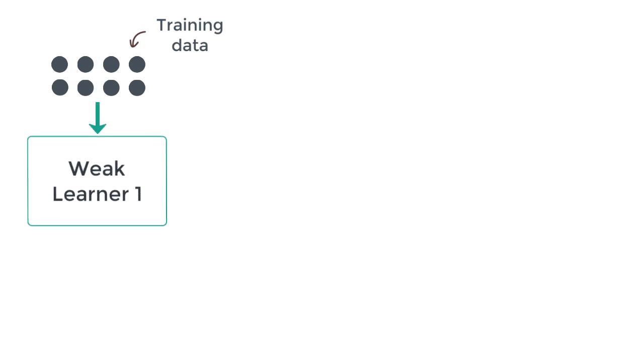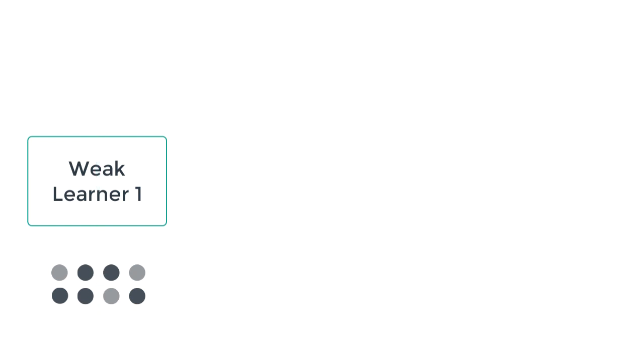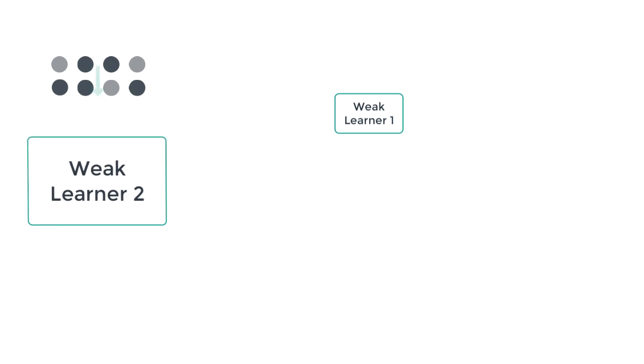Here's the algorithm. Step 1, initialize the weights of each sample to be the same. Step 2, construct the first hypothesis by training on these data points. Step 3, determine the training error of this hypothesis, and then make the weight updates. Now there are two sets of weights that needed to be updated. The first is the sample weights for the next hypothesis. So we need to increase the weights of misclassified samples and decrease the weights of the correctly classified samples. This is to ensure that the next hypothesis focuses more on what the current one missed.